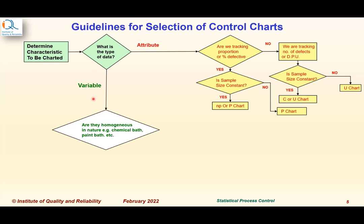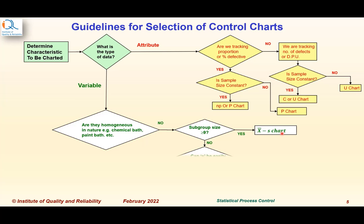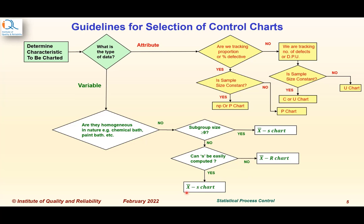If we have variable data, we first ask: are they homogeneous in nature — like a chemical bath, paint bath, etc.? If not homogeneous, is the subgroup size greater than or equal to 9? If yes, we must use X-bar and standard deviation chart. If the subgroup size is less than 9, we ask: can the standard deviation S be easily computed? If not, we use X-bar and range chart. If yes, it is better to use X-bar and standard deviation charts. If the data is homogeneous — chemical bath, paint bath, etc. — we use charts for individuals, known as XMR or individual and moving range charts.